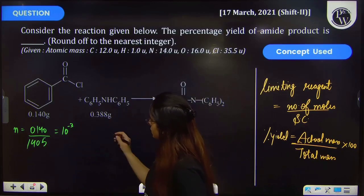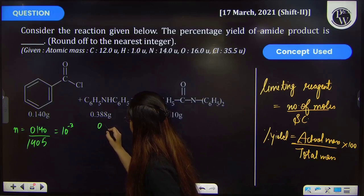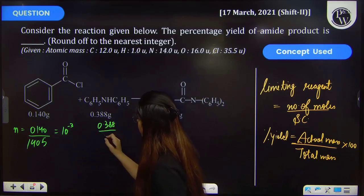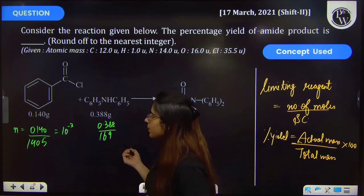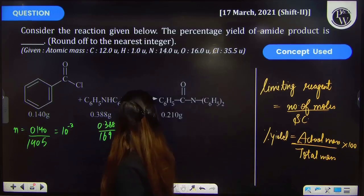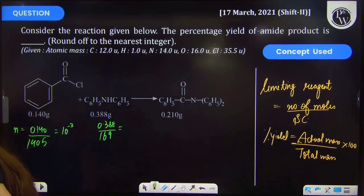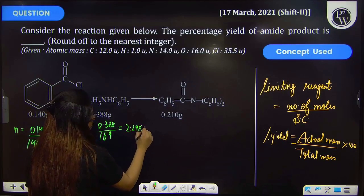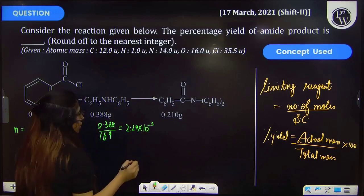Further for this reactant, number of moles will be 0.388 upon molecular mass is 169 gram per mole. And on calculating, it will be equal to almost 2.29 × 10^-3 moles. Right?